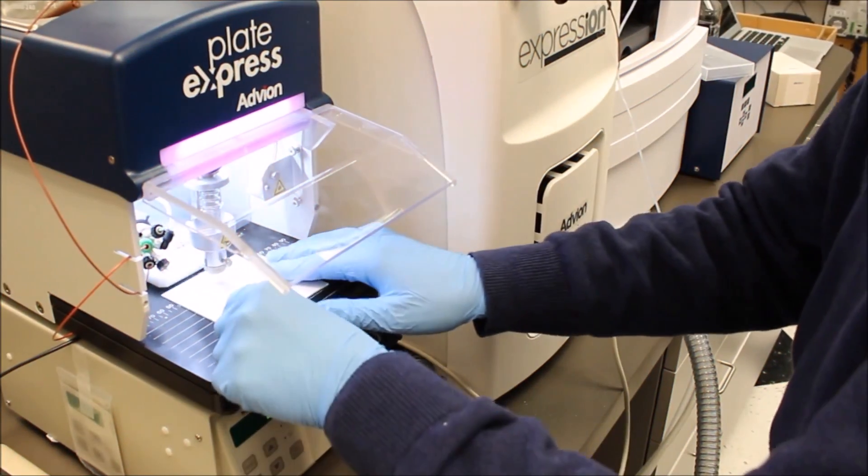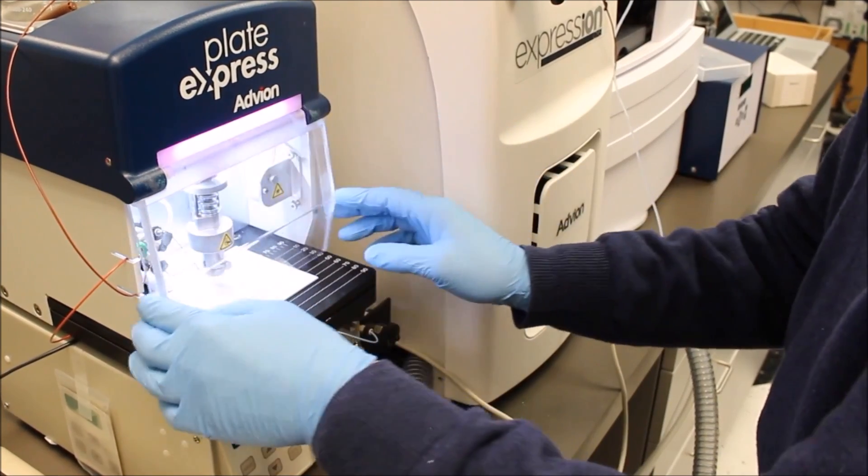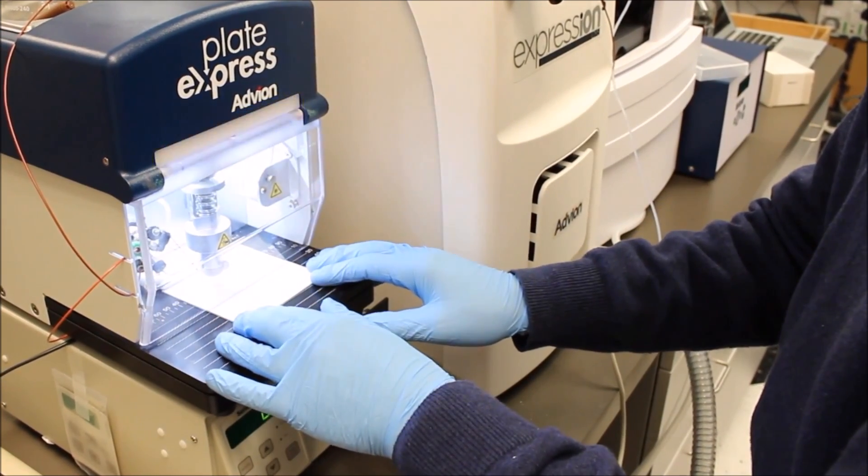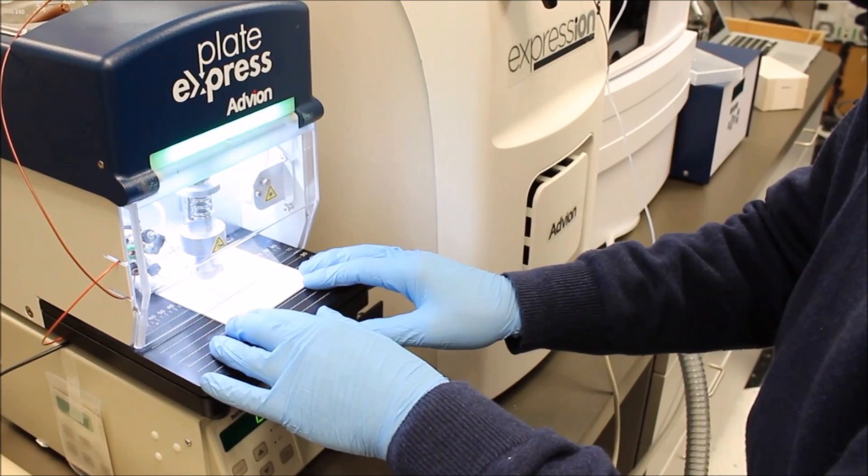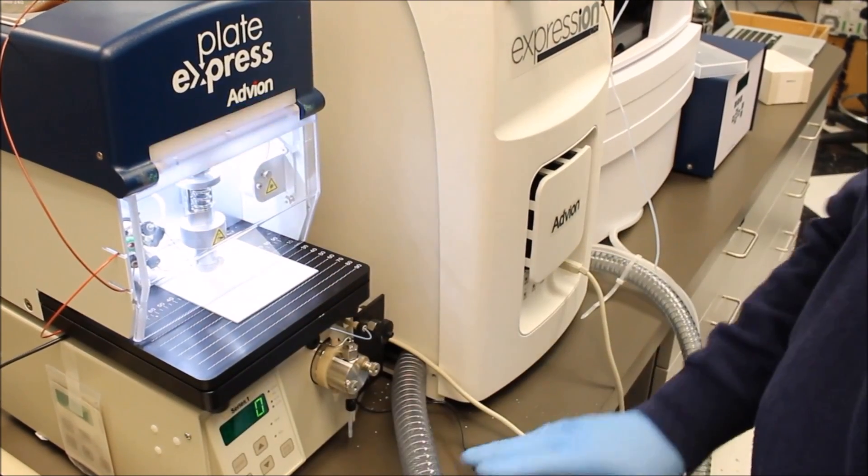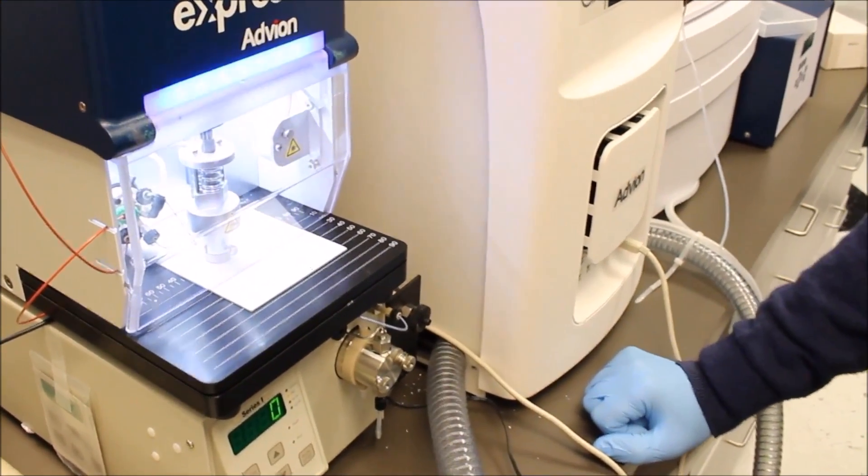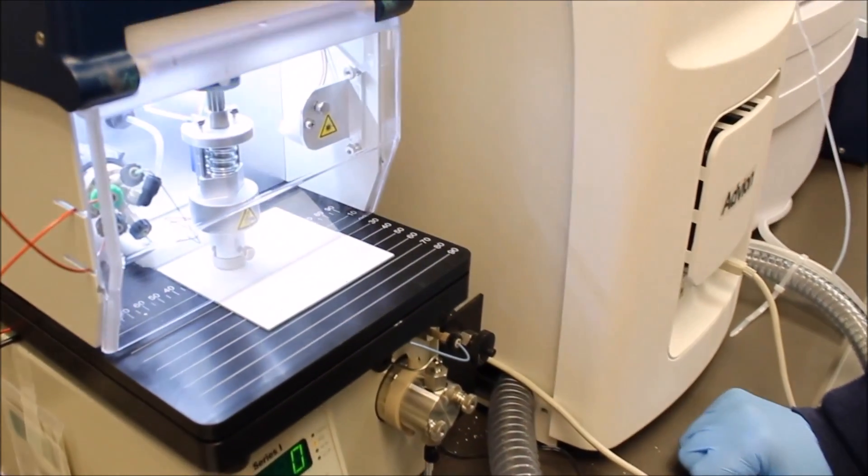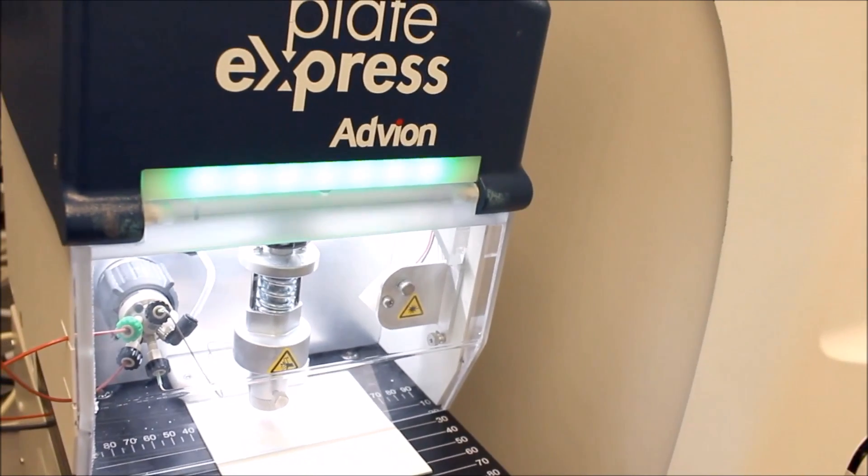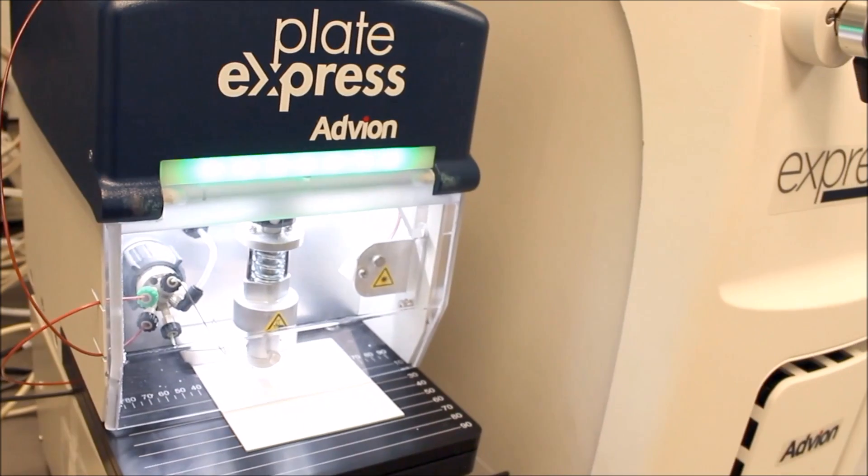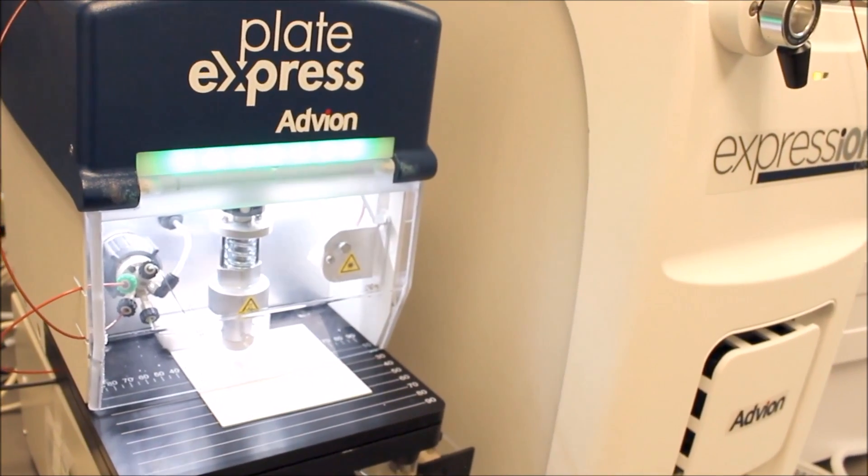And it's as simple as that. Place your developed TLC plate into the Plate Express, align your spot of interest using the integrated laser pointer, and press the button to start. The head will lower, seal the spot of interest, and solvent will extract the compounds into the mass spectrometer.